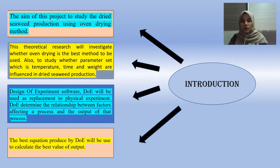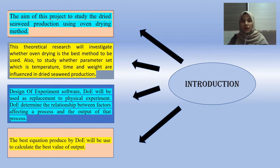Moving to the introduction of this project. The main aim is to study the dry seaweed production using oven drying method, and to investigate whether the oven drying method is the best method to be used. We will also study whether the parameters — temperature, time, and weight — influence dry seaweed production. Design of Experiment software (DOE) will be used as a replacement for physical experiments that cannot be done, and the best equation produced by DOE will be used to calculate the best output values.